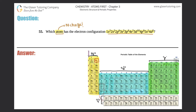Technically, what you can do is you can add up all of these electrons: 2, 2, 6, 2, 6, 2, 10, 6, 2, and 2. If we add all of those up, that's the total amount of electrons.